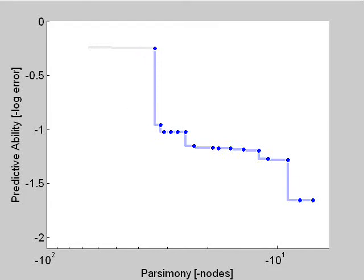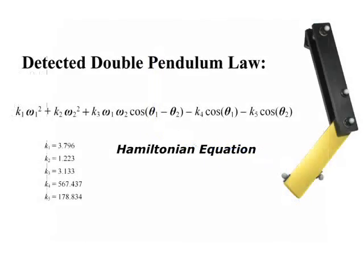The equation that the algorithm found at this point of inflection is the Hamiltonian equation of the double pendulum, which represents the physical law of energy conservation.